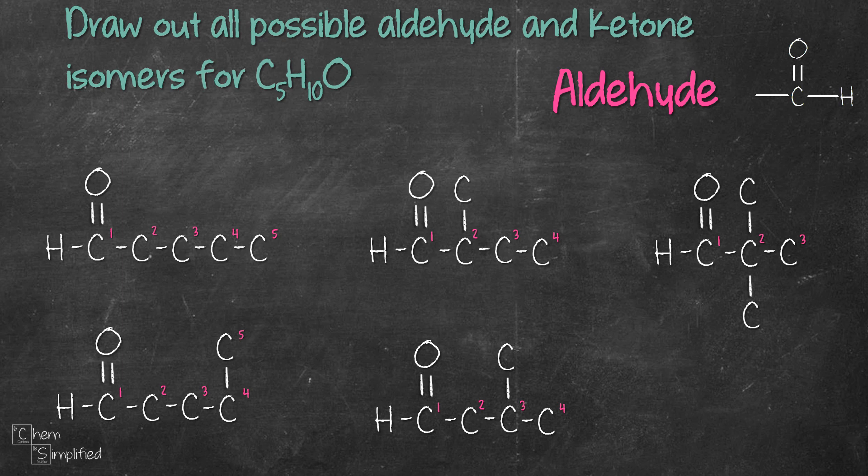Now similar to previous example we don't want to stick anything at the end of the carbon chain otherwise it will give us a repeat of what we have already drawn. Since we can't shorten the chain to two carbon that means we are done with aldehyde.